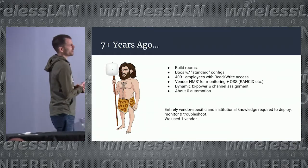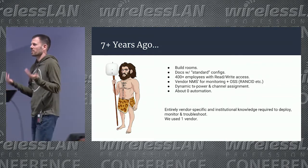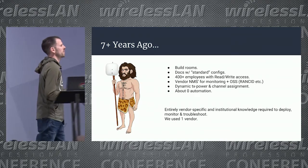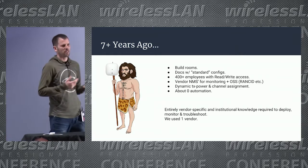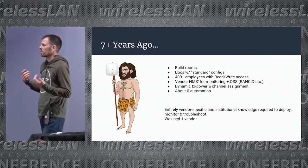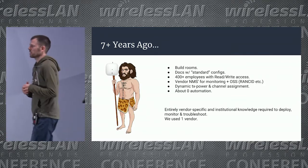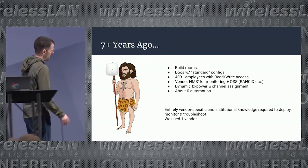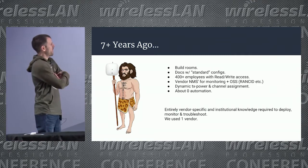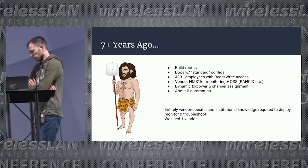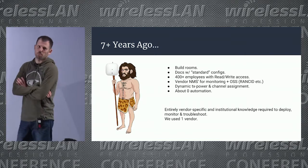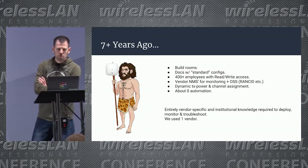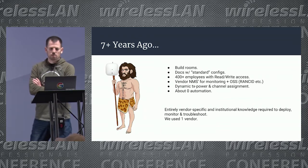Very loose dress code at Google — all you have to do is wear something, so I got away looking like this seven years ago. So yes, it was build rooms, documents with standard configurations, entirely CLI driven. We had a lot of employees with access to the infrastructure for both deployment and monitoring. We were using vendor NMSs such as Prime and AMP. We had a host of other tooling — open source, Rancid, Nagios. Pretty much dynamic everything, no automation. We deployed a vendor.